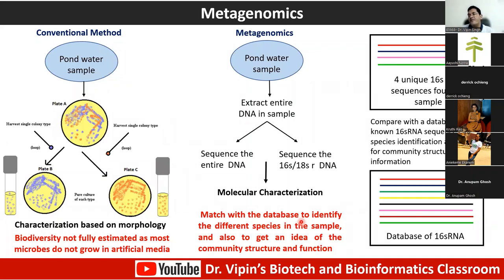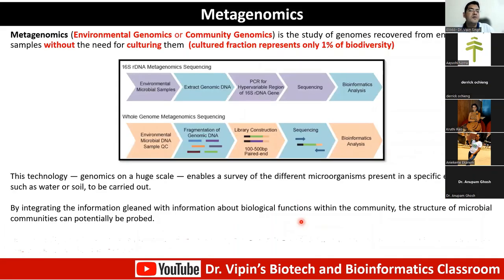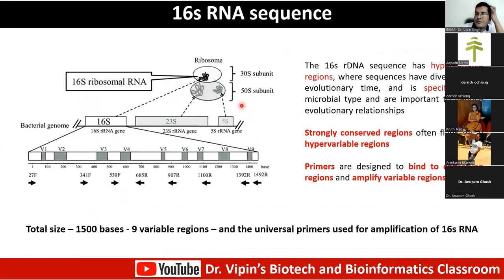Metagenomics gives you a very detailed idea of the possible species present and the community structure. You match against a database to identify which organisms are present. With 16S rDNA metagenomic sequencing you can identify bacterial populations to the genus level; with whole-genome sequencing you can identify to the strain or sub-strain level. There are a whole lot of metagenomics projects going on, including the Human Microbiome Project.